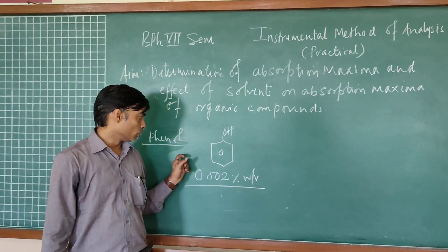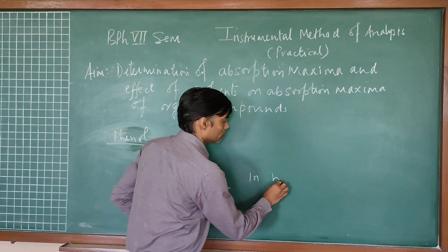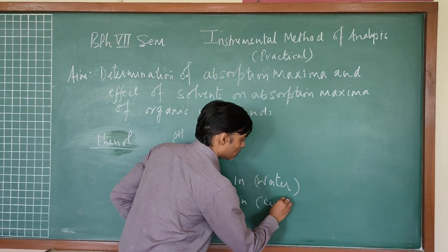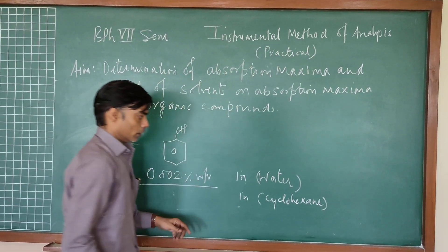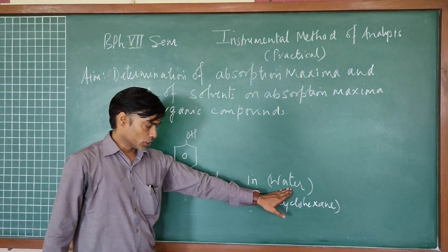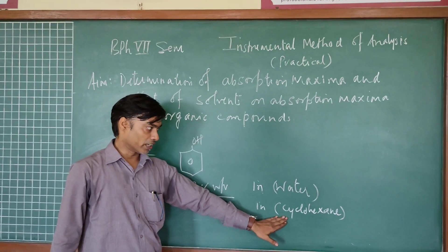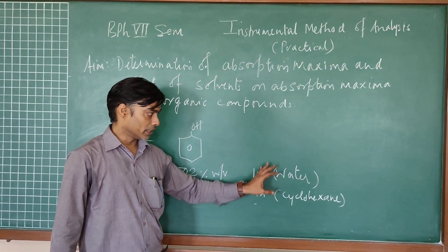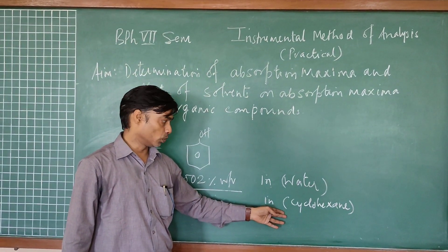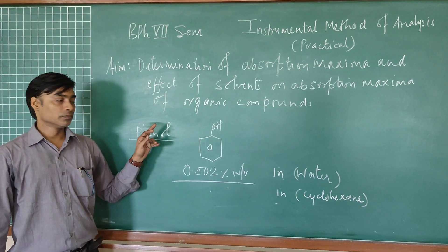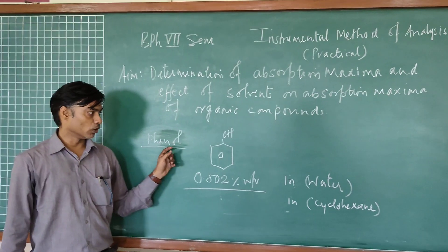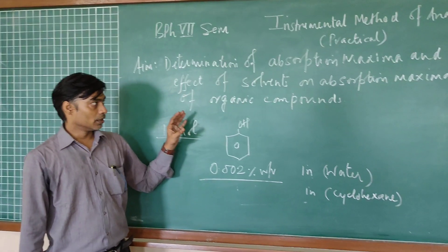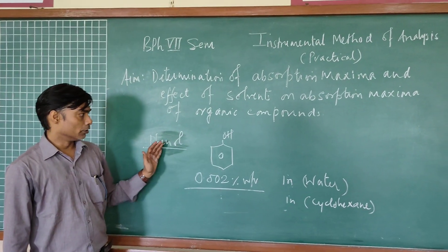We prepare a 0.002 percent weight by volume solution of phenol in water and in cyclohexane. One solvent is polar — water — and the other is an organic non-polar solvent — cyclohexane. There is a difference in dielectric constant between the two. The question is: what is the effect of this solvent choice on the absorption maxima of the phenolic structure?